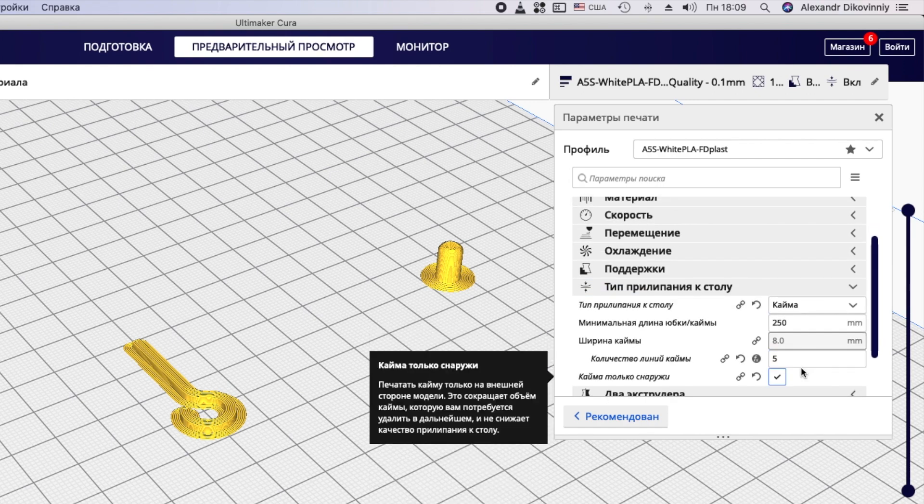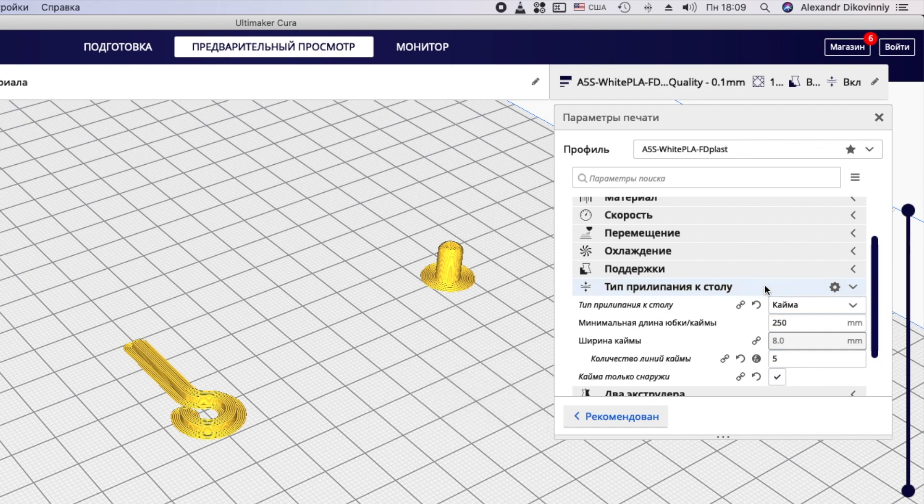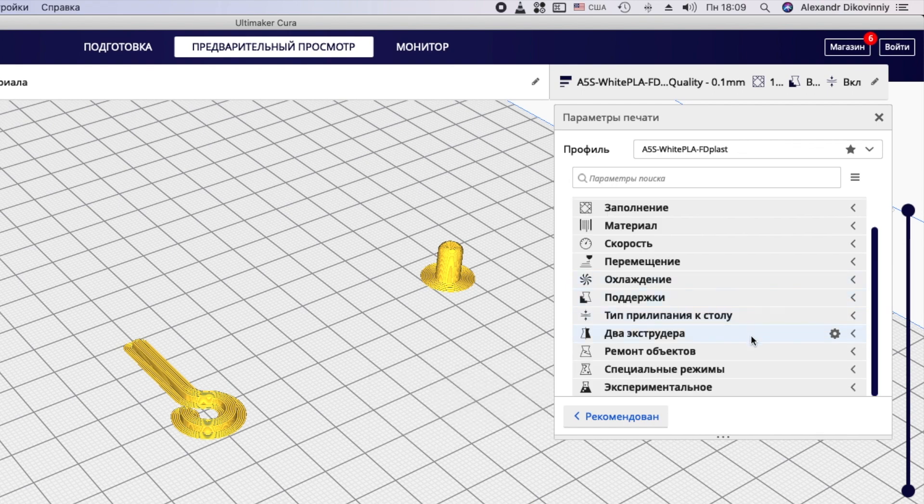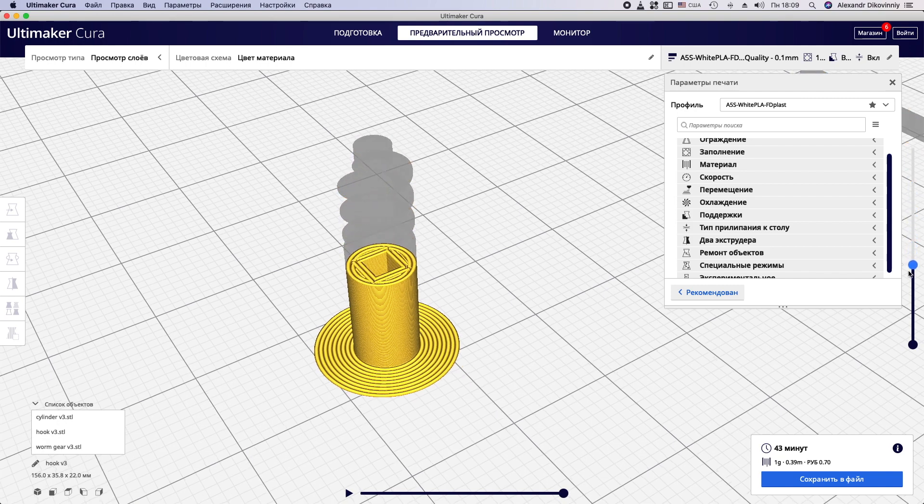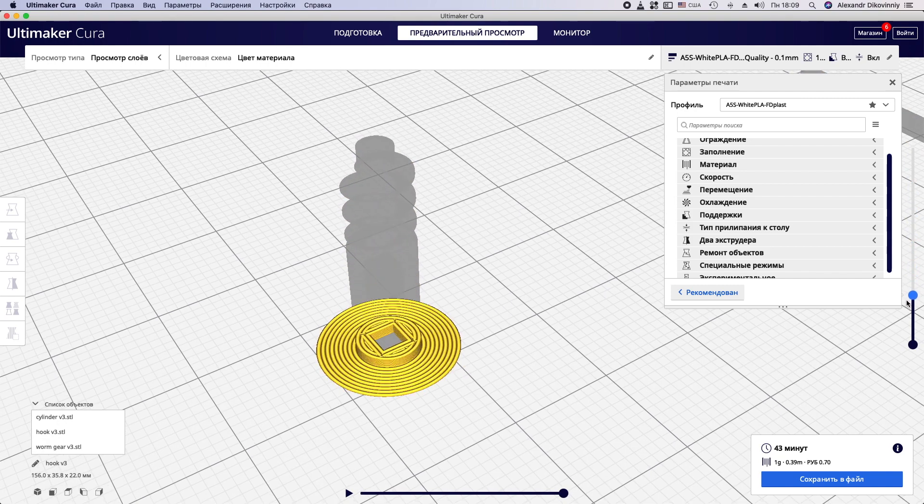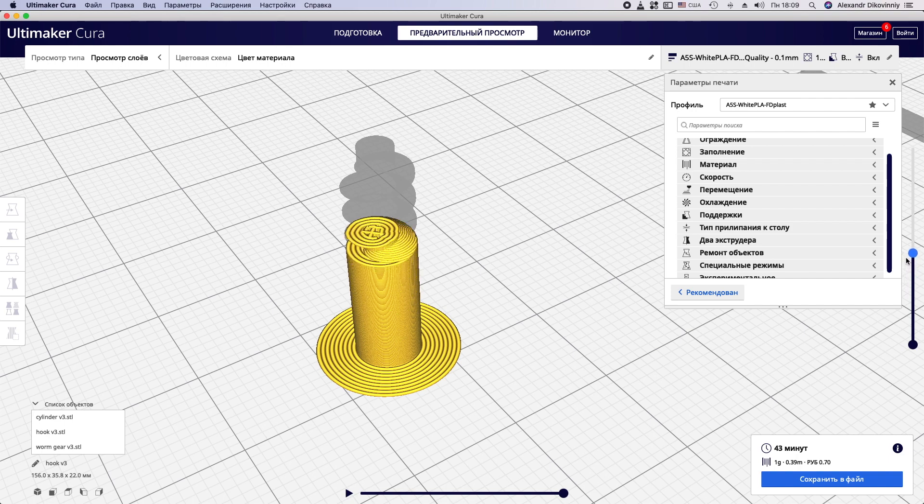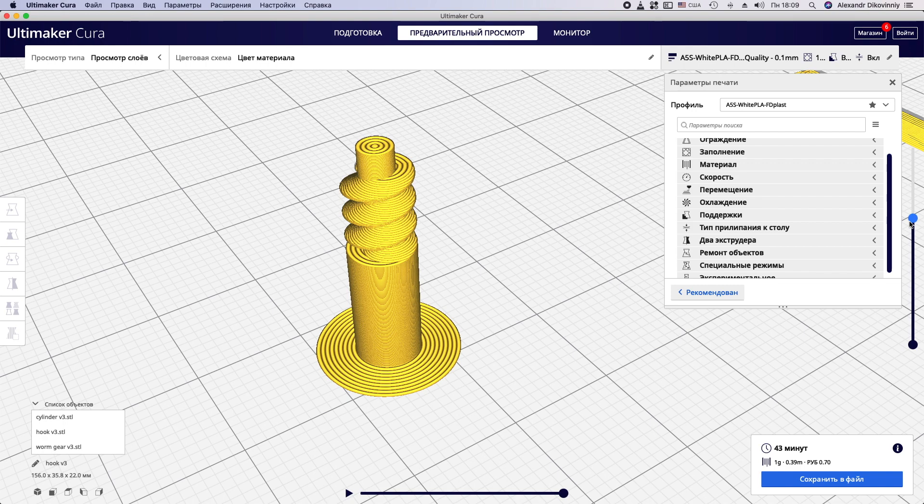Type of adhesion to the table: brim. Let's see how the worm will be printed. It's alright. Let's start printing.